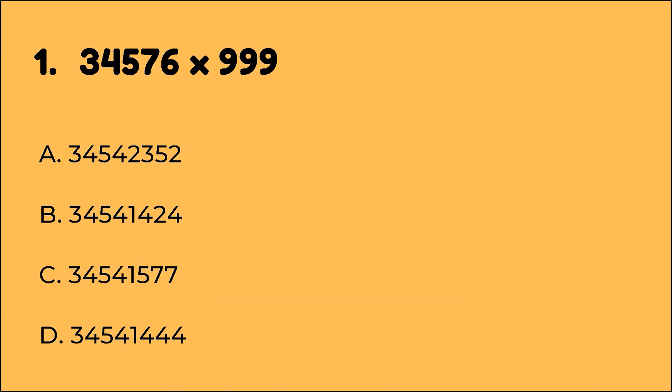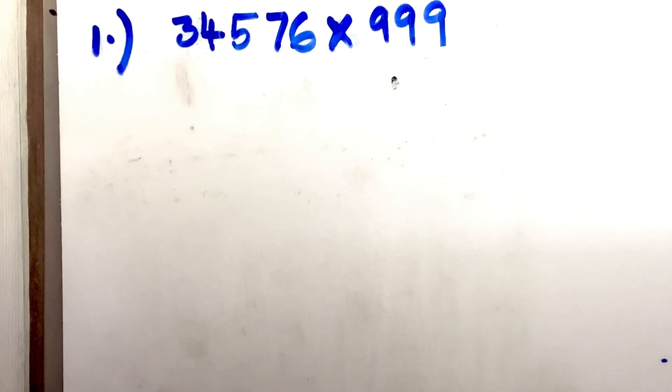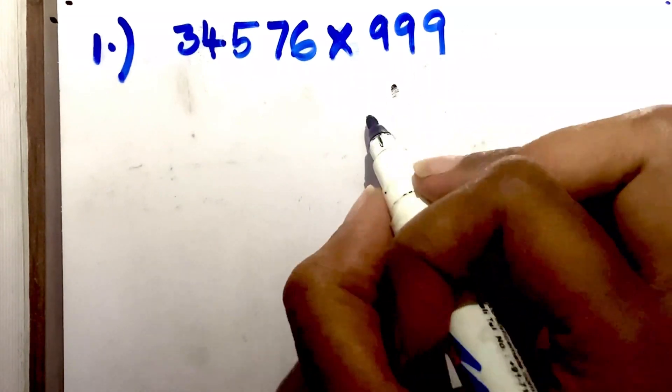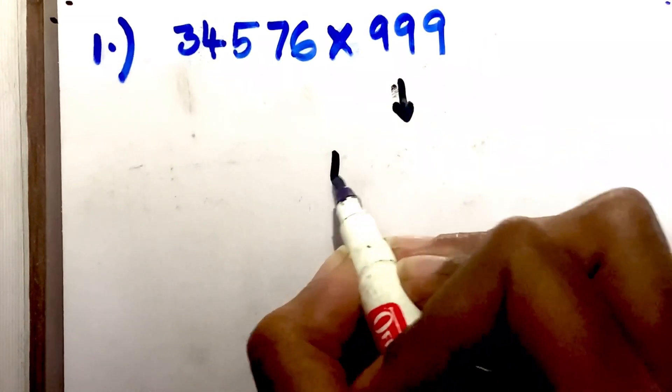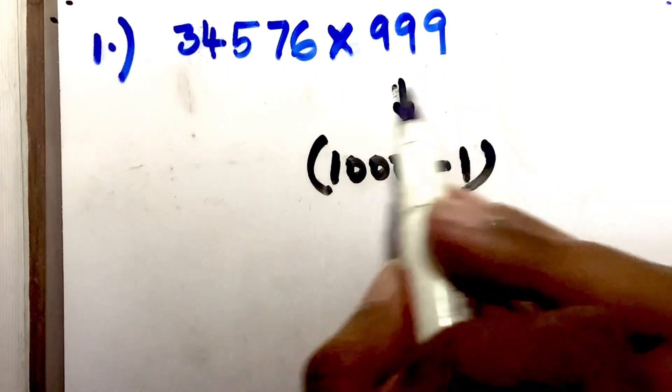So question by question. Pause the video and try on your own first. The first question: 34,576 multiplied by 999. Every time you see big calculations, don't think you have to calculate directly. There will always be some trick to simplify and make it easy. For example, in this question, 999 can be written as 1000 minus 1.